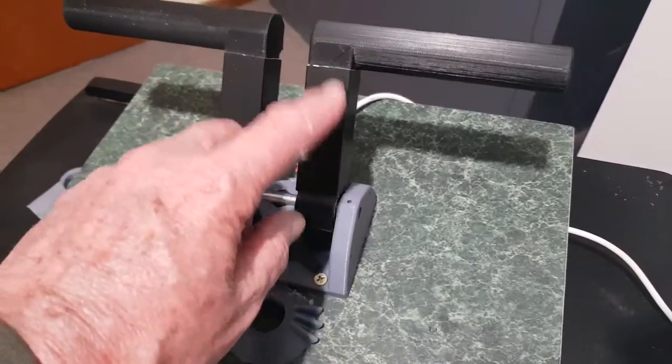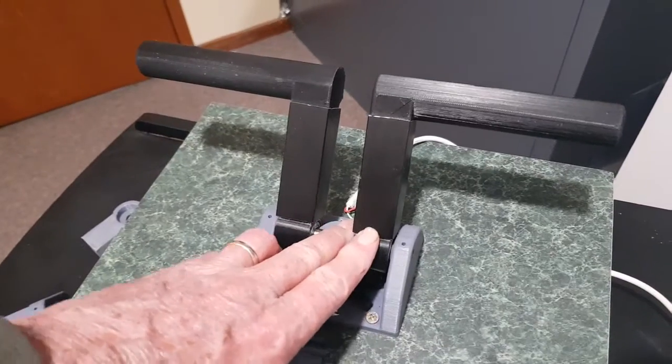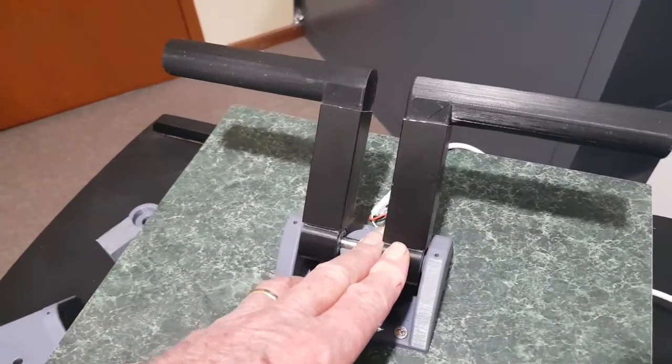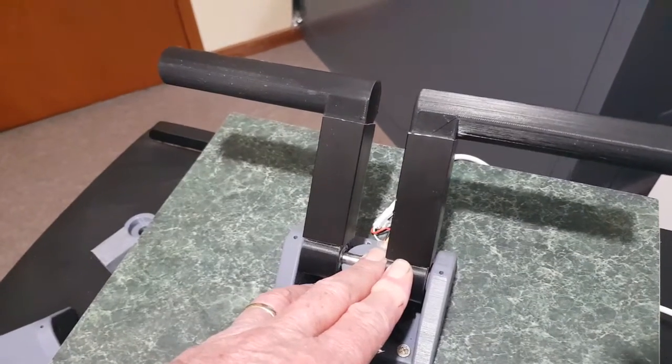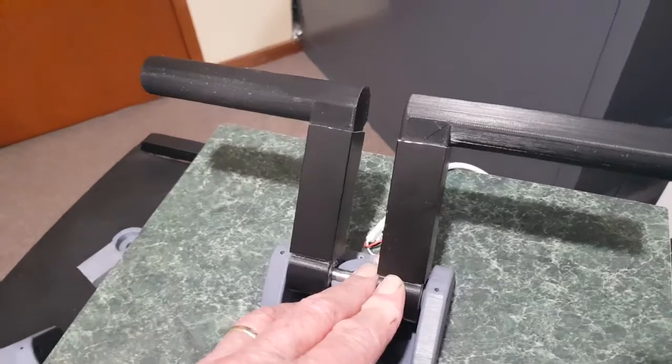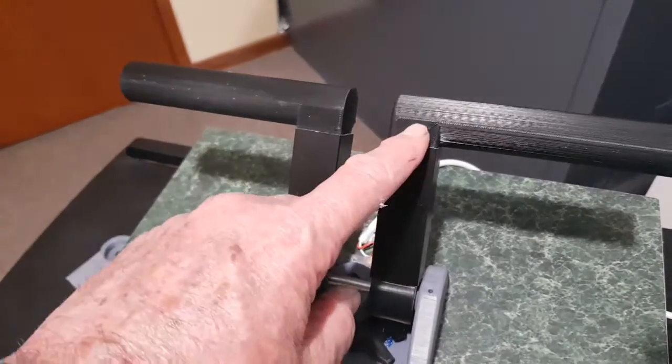The other material that's used that's not printed is this aluminum extrusion, which is just 25 millimeter external, 23 millimeter internal square tubing that's used in lots of display furniture and things of that nature. Those just push in.